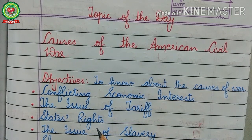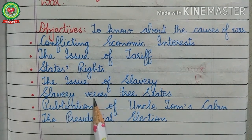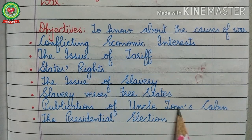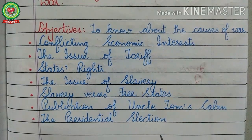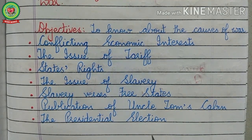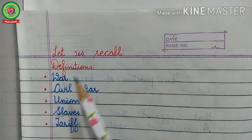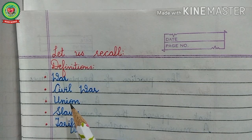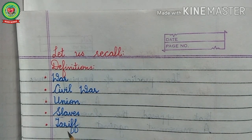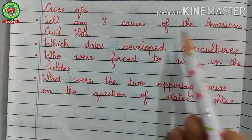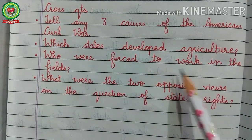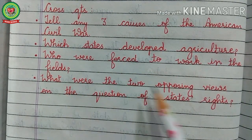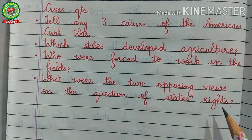Today we are going to discuss some other causes of the American Civil War. It includes the issue of slavery, slavery versus free states, publication of Uncle Tom's Cabin, and the presidential election. But before starting today's topic, let us recall the definitions and cross question answers related to the previous topic. Answer these cross questions: tell any three causes of the American Civil War, which states developed agriculture, who were forced to work in the fields, and what were the two opposing views on the question of states rights.